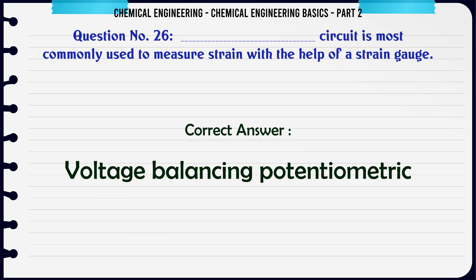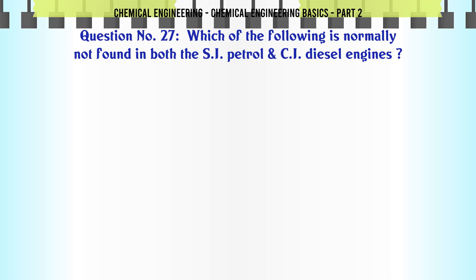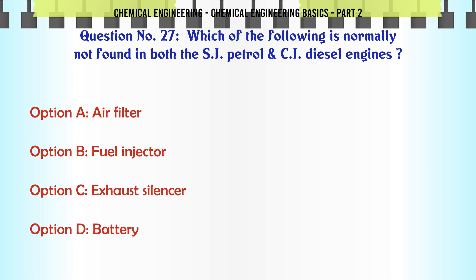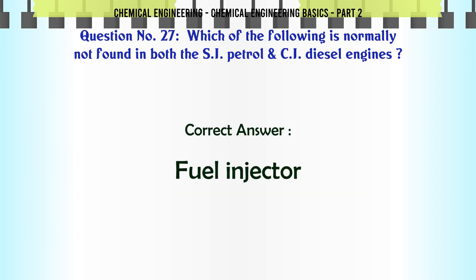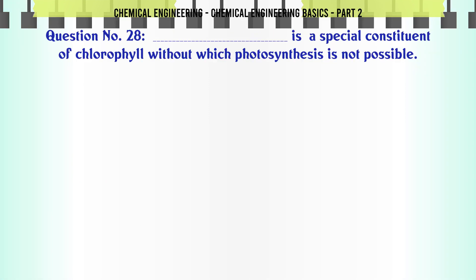Which of the following is normally not found in both SI (petrol) and CI (diesel) engines? a) air filter, b) fuel injector, c) exhaust silencer, d) battery. The correct answer is: fuel injector.